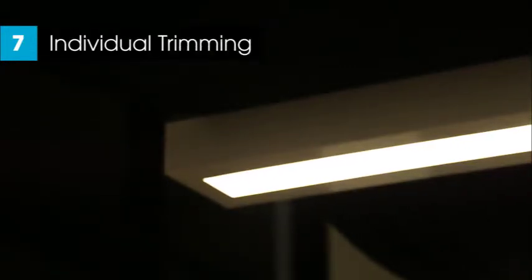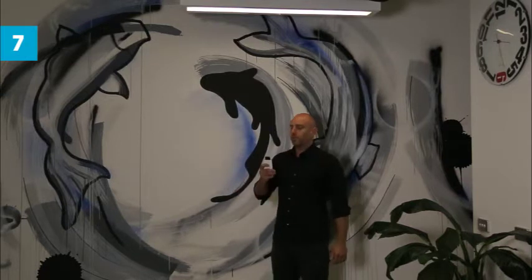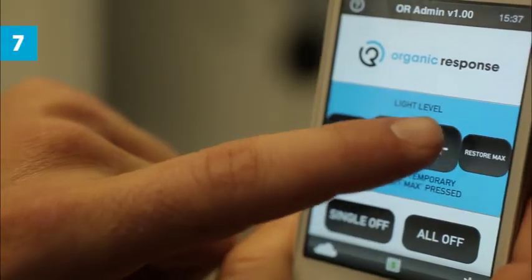Once you've achieved your base lighting level, you're able to go around and further tailor the lighting levels to achieve the look and feel for the space or enhance energy savings. For instance, you might dim down a corridor to achieve greater energy savings, or you can do some feature lighting. A great example of this is wall washing, which can really enhance the look and feel of the space. It's quite simple: go to the wall washing luminaire, dim it up to where you want it, and then set max.